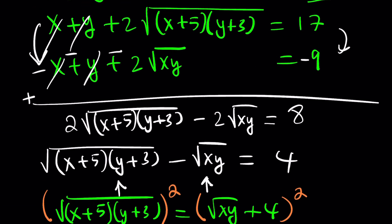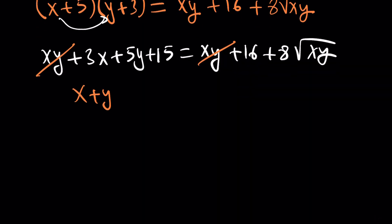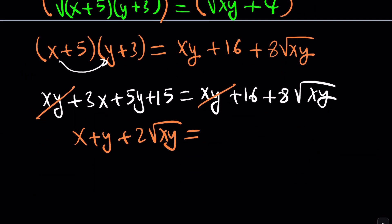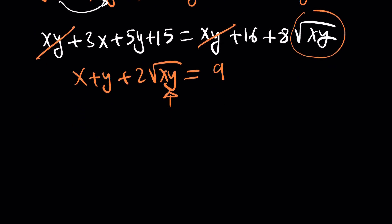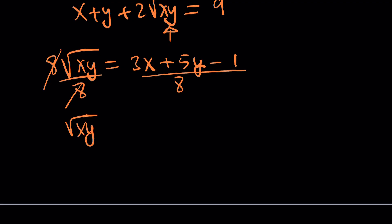Looking at the earlier equation x plus y plus 2 times the square root of xy equals 9, if we can isolate sqrt(xy) in terms of x and y we can substitute to get a linear relationship. Subtracting 16 to isolate gives 8 times the square root of xy equals 3x plus 5y plus 15 minus 16, which is minus 1. Dividing both sides by 8: the square root of xy equals (3x + 5y − 1) / 8.